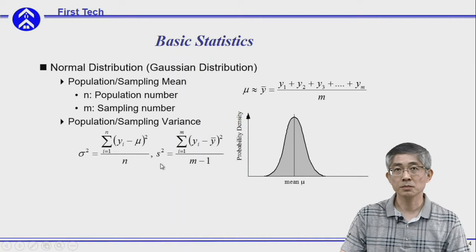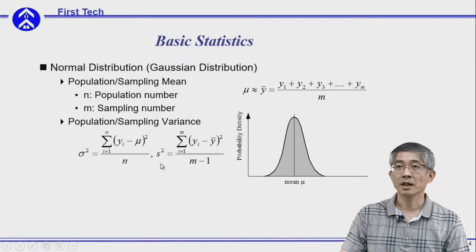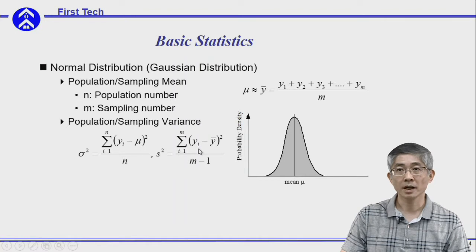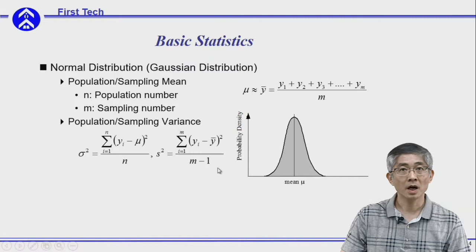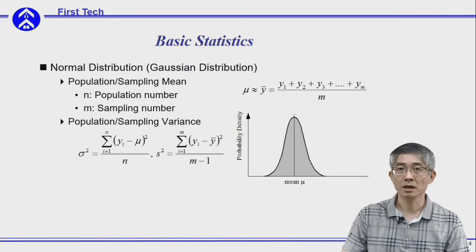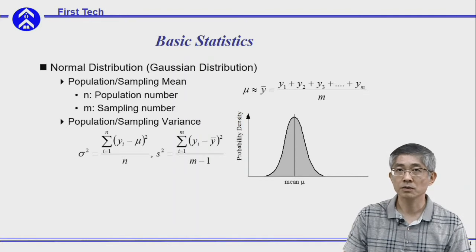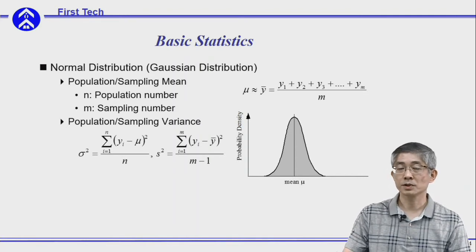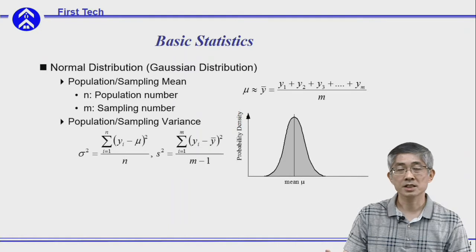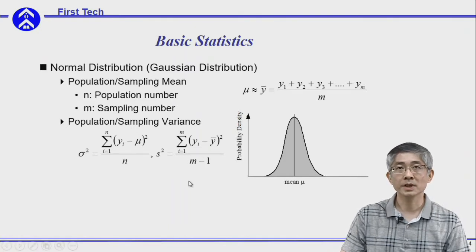If you are measuring sample variance, this is the square deviation of the output y and the mean output divided by m minus 1, where m is the number of samples. Why do we use m minus 1 in the sample variance? This is related to expected values in statistics. Using this equation, we will get an unbiased estimation of sample variance.